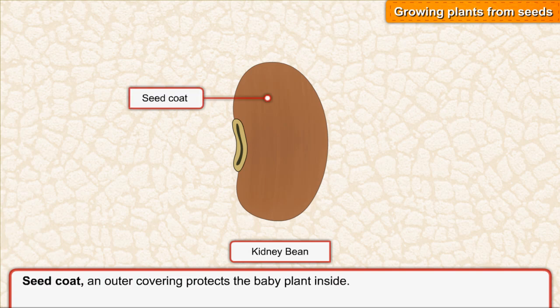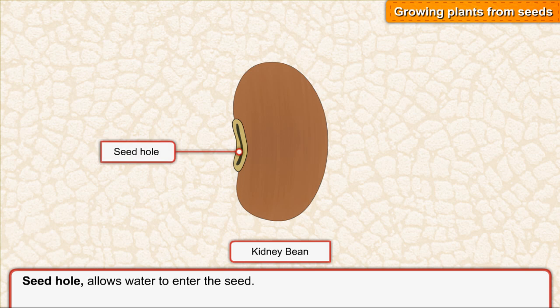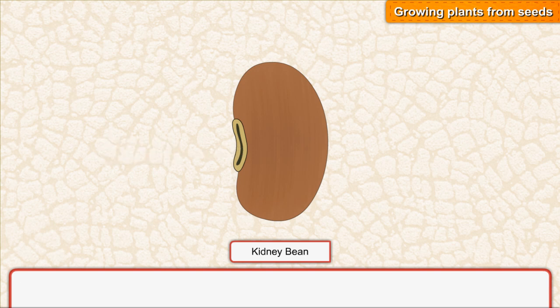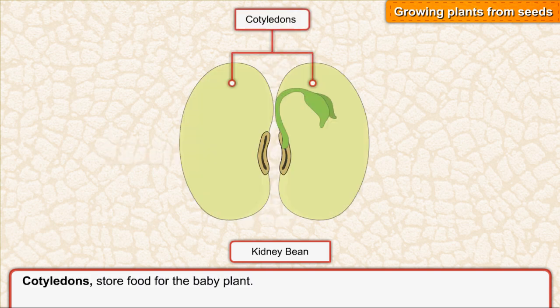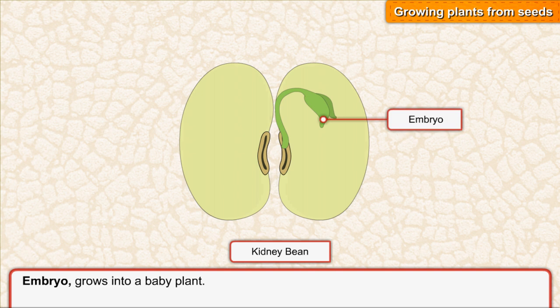Seed coat: an outer covering that protects the baby plant inside. Seed hole: allows water to enter the seed. Cotyledons: store food for the baby plant. Embryo: grows into a baby plant.